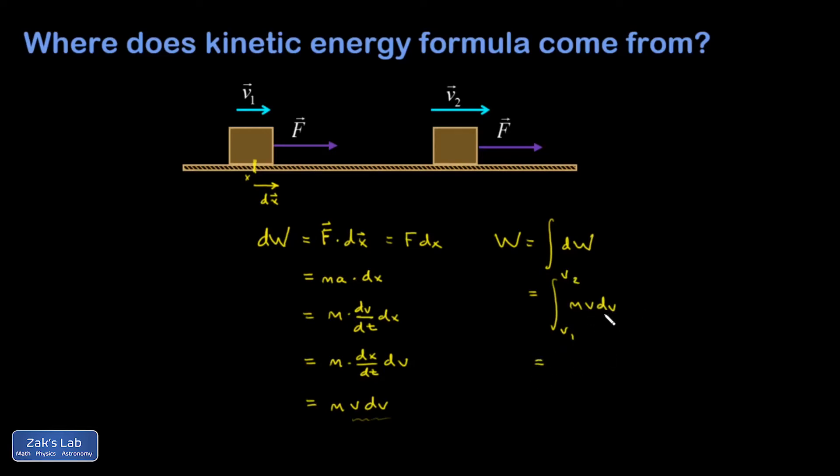And when I integrate this with respect to v, I get a one-half v squared for that part and then an m tacked on. So I end up with one-half mv squared as we go from v1 to v2.